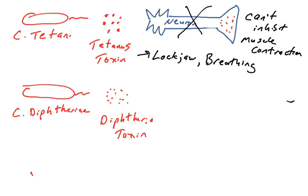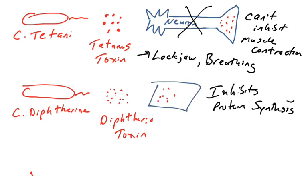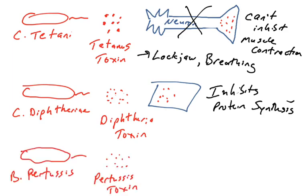C. diphtheriae causes diphtheria. There's a toxin that comes out of the bacteria. Diphtheria toxin inhibits protein synthesis. This would be bad for your body, definitely inhibiting protein synthesis. So it can lead to death as well.